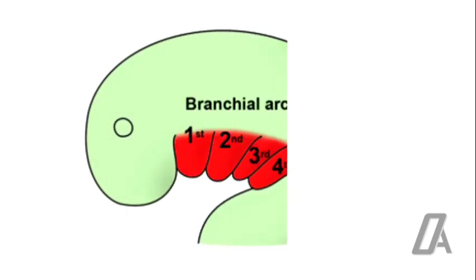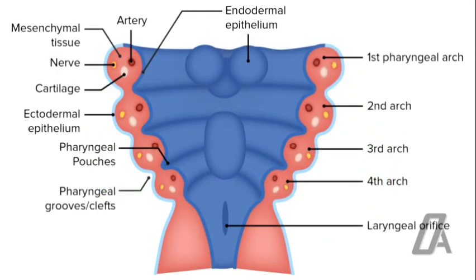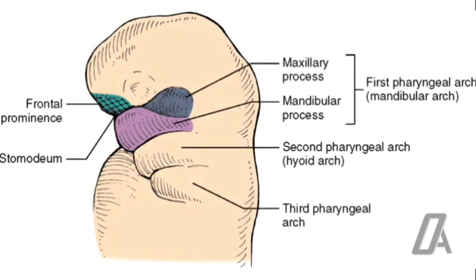The branchial arches, developing during the late somite period, are formed from mesoderm of the ventral foregut. The mesoderm segments to form five bilateral mesenchymal swellings. There are five pairs of branchial arches, the fifth being transitory. The branchial arches are separated by four branchial grooves on the external aspect and corresponding five pharyngeal pouches on the internal aspect of the gut. The first arch is the mandibular arch and the second arch is the hyoid arch. The jaws of the face — maxilla and mandible — are derived from the first arch.